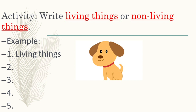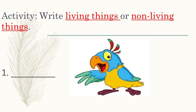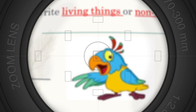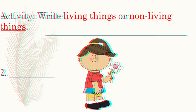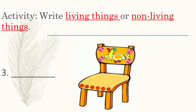Number one is a bird. A bird — is it a living thing or non-living thing? Can you please write? Next, number two is a girl. A girl — is it a living thing or non-living thing? Next, number three is a chair. A chair — is it a living thing or non-living thing?